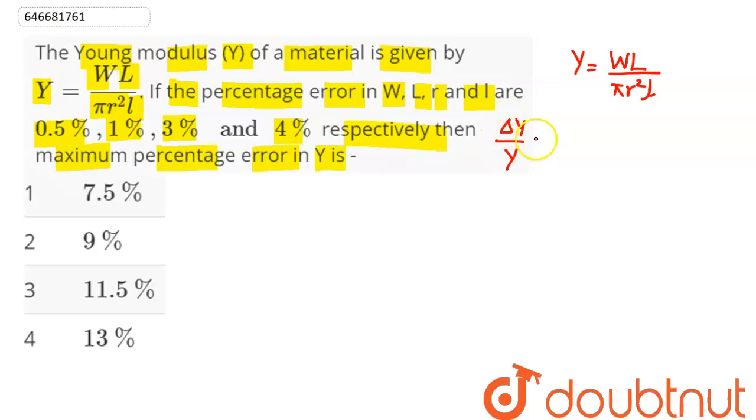This gives us 1 × ΔW/W plus ΔL/L. For maximum percentage error in Y, π is constant, so its delta value will be zero.